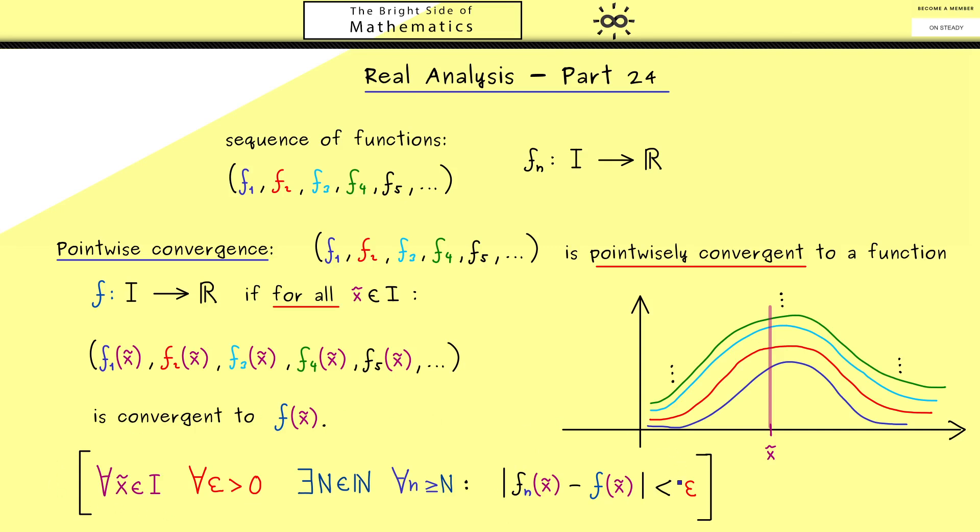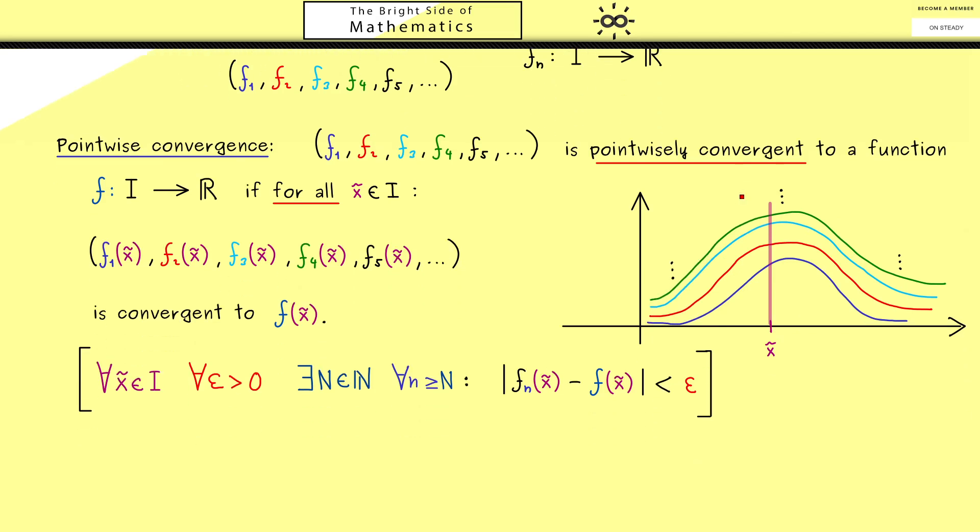This is exactly what you can remember for the pointwise convergence of a sequence of functions. It just means that all the vertical slices in the graph are convergent sequences. So let's look at an example.